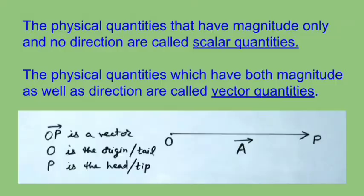The physical quantities that have magnitude only and no direction are called scalar quantities or simply scalars. Some examples of scalars are mass, length, time, distance, work, and energy.